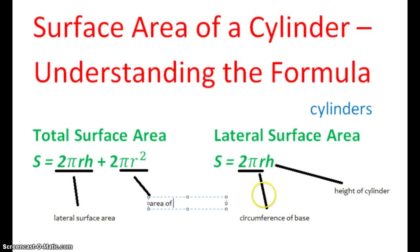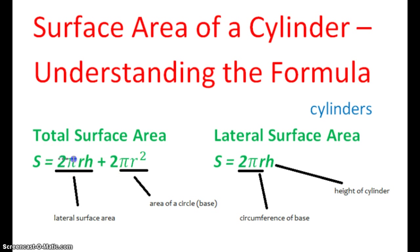We'll label that area of a circle — in this case, the base. The area of the circular base is πr², and we have two of them. So here's your lateral surface area, plus the area of your two circles — you combine those to find the total surface area. For this video, I want you to be able to explain why the formula for lateral surface area is what it is, as well as why the formula for total surface area is what it is.